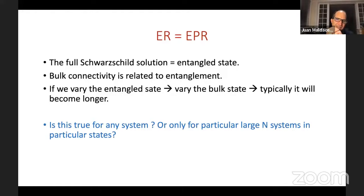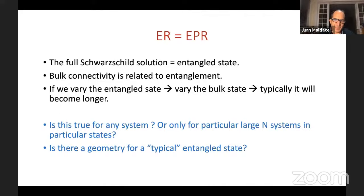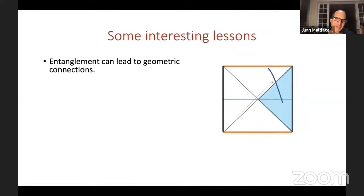One can ask whether this is true for any system or only for large-N systems with a gravity dual. For example, if you had two black holes in a generic entangled state, would they still have some wormhole — perhaps a very long one? We don't really know the answer. We don't know whether there is a geometry for a typical entangled state.